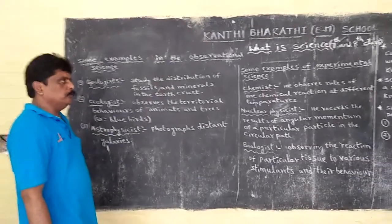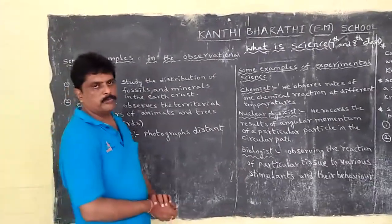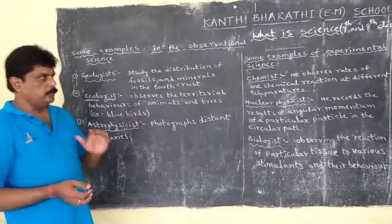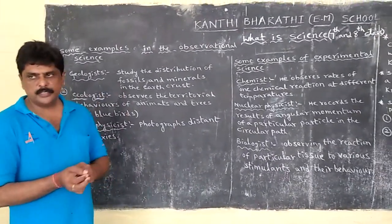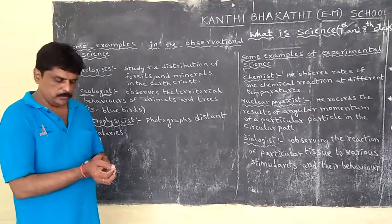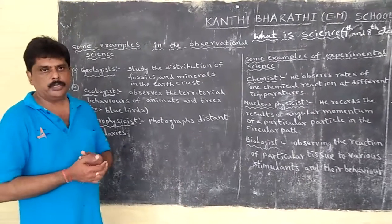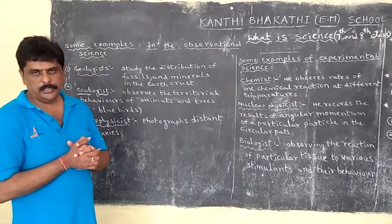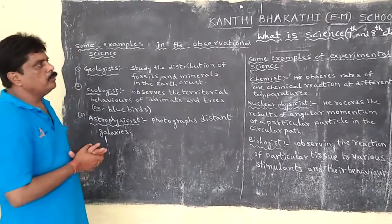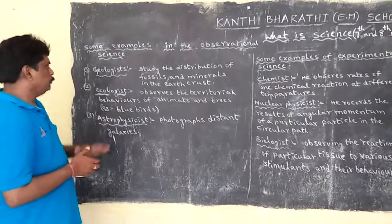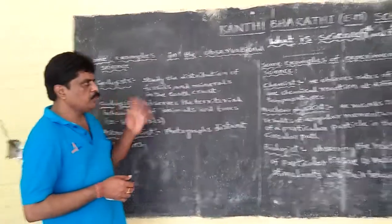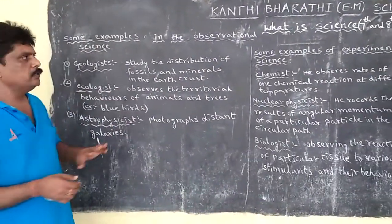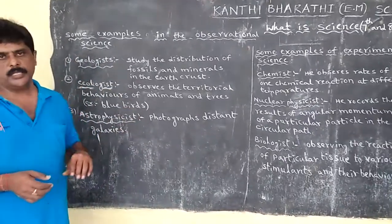Good morning students. We are already learning about what is science. Science is a scientific thinking, and what we have to observe around us is called science learning in the studies class. Science is two types: one is observational science and one is experimental science.